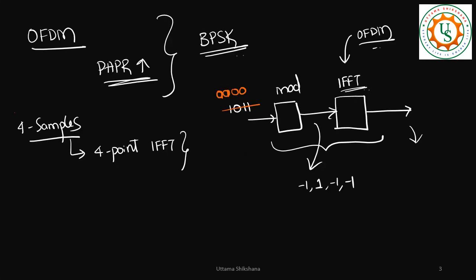I have taken zeros, which means at the output I will get all ones: plus 1, 1, 1, 1. So four point IFFT I need to do. How does my IFFT look like for four point? So I am writing the four point matrix.